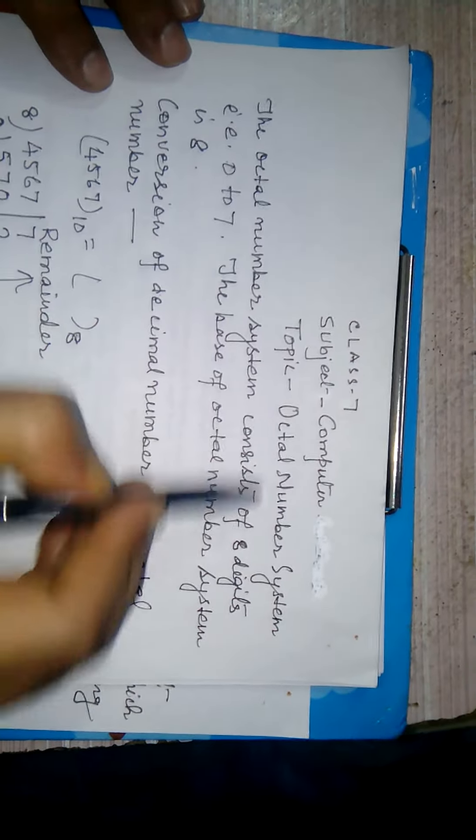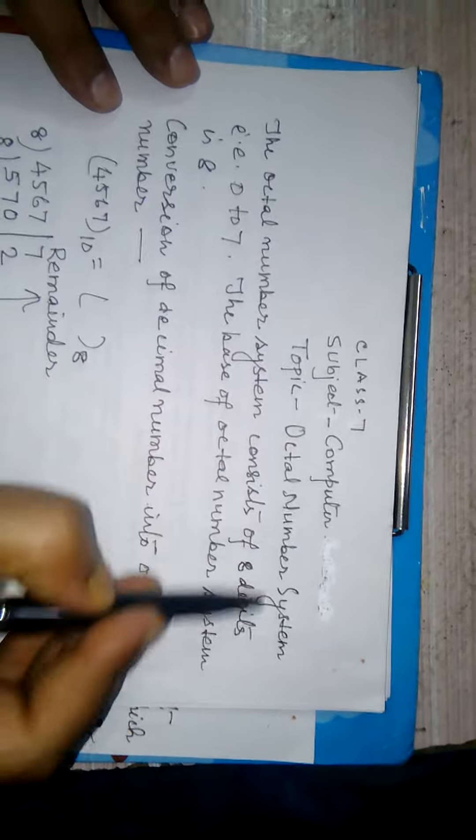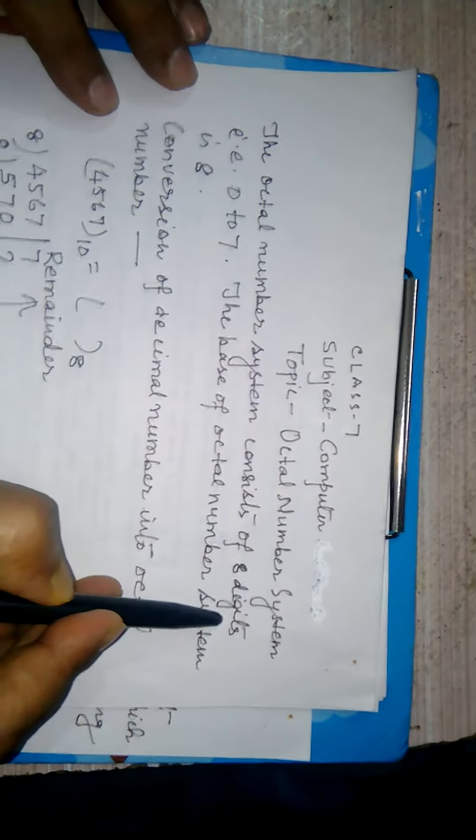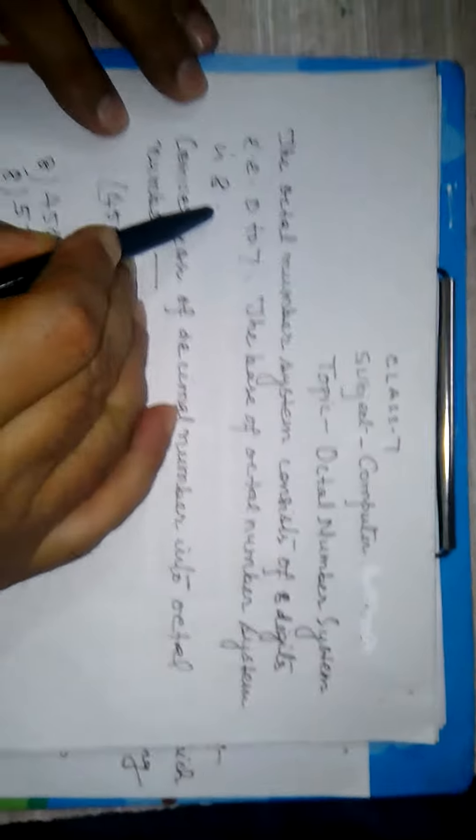Welcome students, today I am going to discuss octal number system. The octal number system consists of 8 digits that is 0 to 7. The base of octal number system is 8.